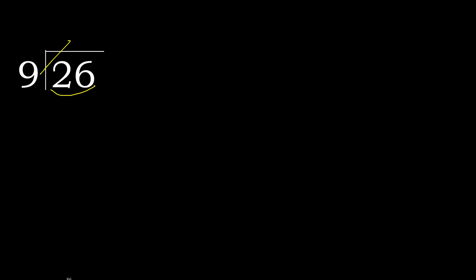But not greater. 9 multiplied by 3 is greater. Multiplied by 2: 18 is not greater. So 26 minus 18 is 8.